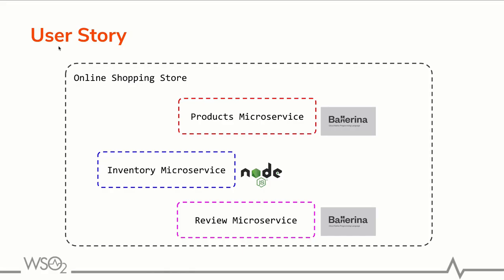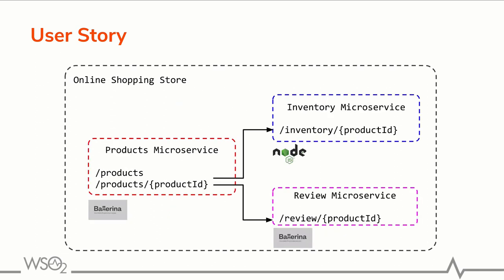Let's take a sample user story where you have an online shopping store. In this shopping store you have several microservices written in different languages. If you take this microservices collection you have a products microservice, inventory, and review. If you go deeper into the products microservice you have two different resources: one is 'products' and the other is 'products/{productId}'.